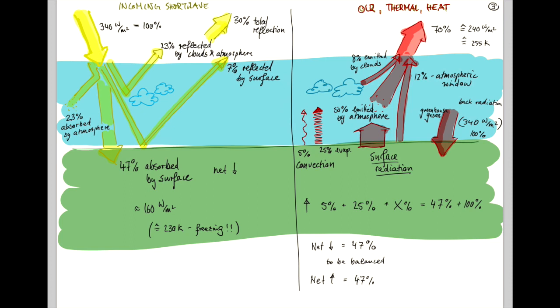If you do that, you find 147 on the right, minus 30 from the left. We find that Earth's surface OLR, outgoing longwave radiation, has to be 117% of the incoming solar radiation.